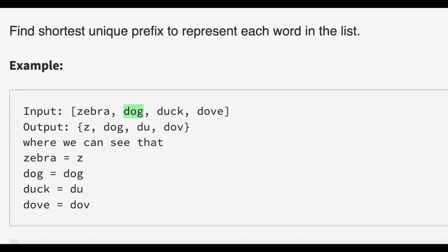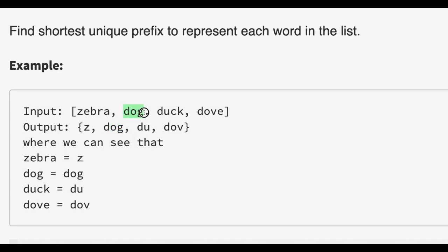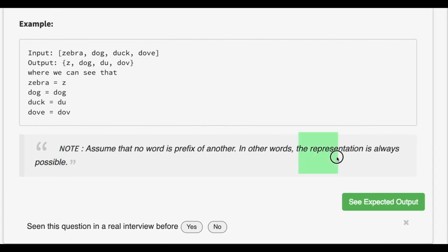For dog, if we take only 'D' as a prefix, it cannot uniquely represent dog because 'D' can represent three strings. So we take 'DO', but DO also doesn't uniquely represent dog since DO matches both DOG and DOVE. So we take the whole string 'DOG'. Similarly, 'DU' represents duck and 'DOV' represents dove. Note that a unique representation is always possible.